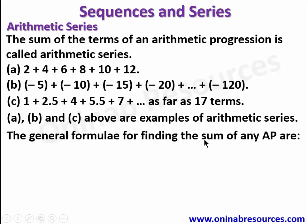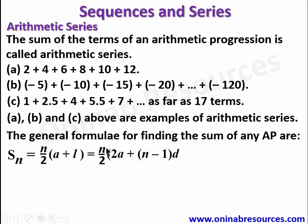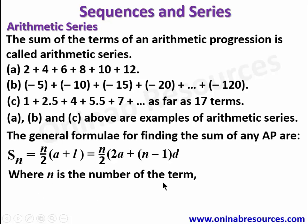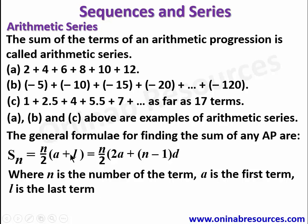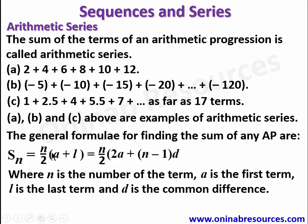The general formulae for finding the sum of any AP are: Sn equals n over 2 into a plus l, which is also equal to n over 2 into 2a plus n minus 1 times d, where n is the number of terms, a is the first term, l is the last term, and d is the common difference. Depending on the nature of the question, you use the first formula when given the last term, first term, and number of terms.